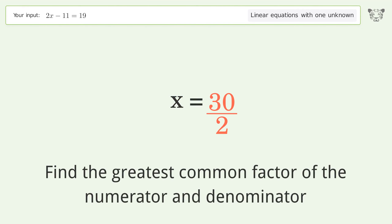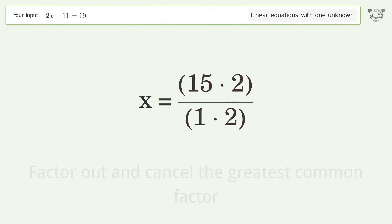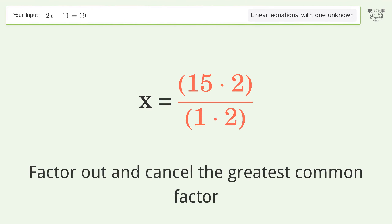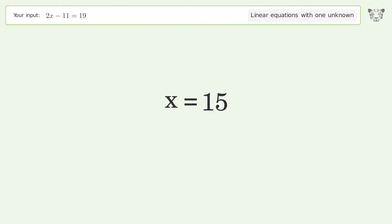Find the greatest common factor of the numerator and denominator. Factor out and cancel the greatest common factor. And so the final result is x equals 15.